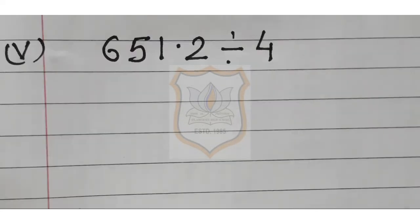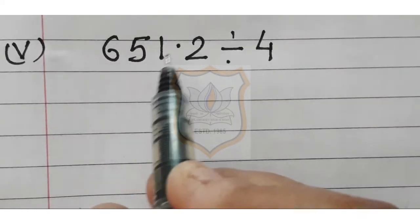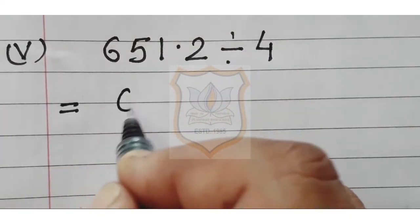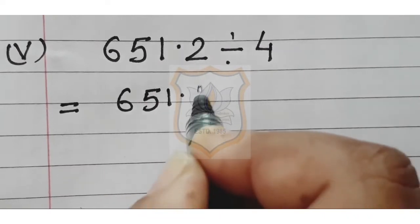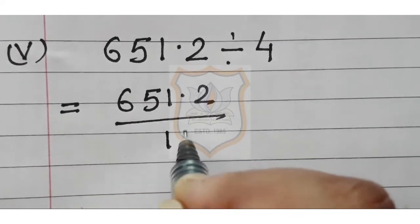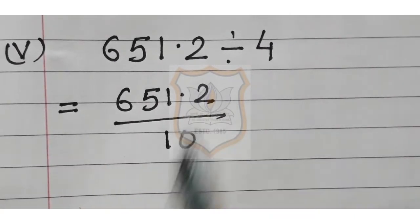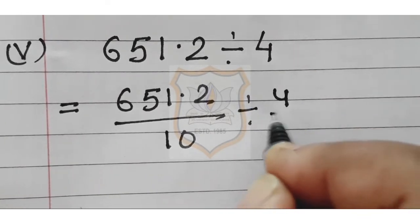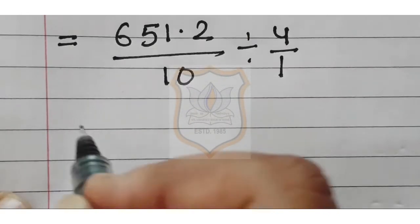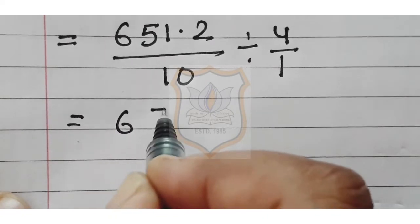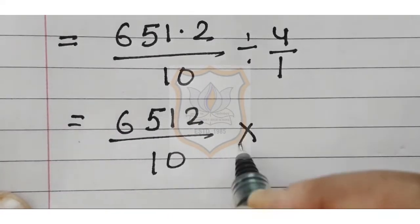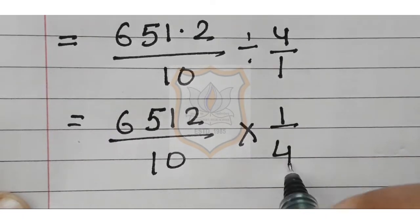Now let's solve part 5: 651.2 divided by 4. First we remove the decimal. 651.2 upon 10 — because there is only 1 digit after the decimal. Divided by 4 upon 1.